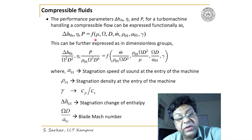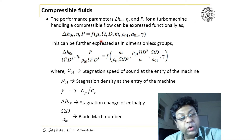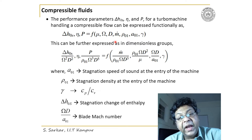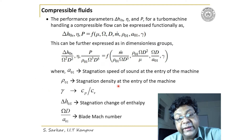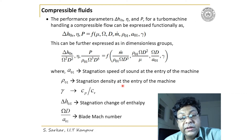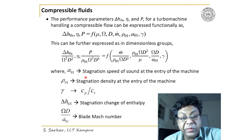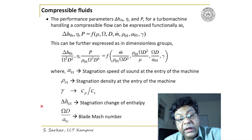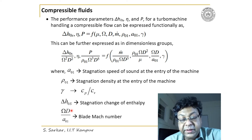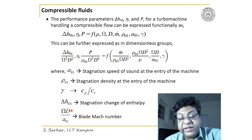Here μ is the viscosity, ω is the rotational speed in radians per second, D is the diameter of the impeller, ṁ is the mass flow rate through the machine, ρ01 is the stagnation density at the entry, a01 is the stagnation speed of sound at the entry, γ = cp/cv, and ΔH0s is the stagnation enthalpy change across the machine — a rise for compression, a drop for a turbine.